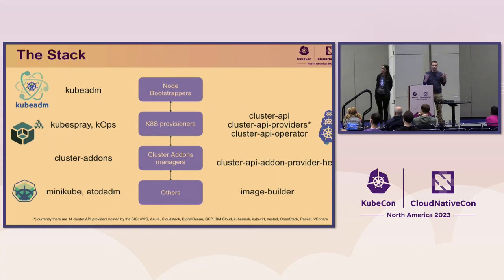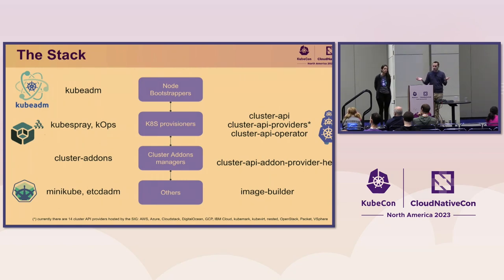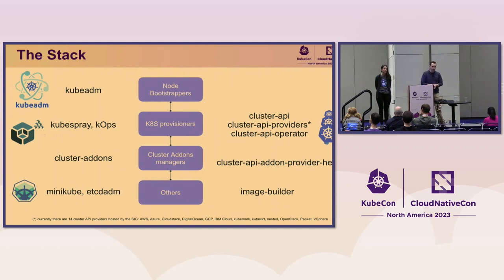We have providers for AWS, Azure, GCP, and also some bare-metal providers. Once you create a Kubernetes cluster, the first thing you have to install is CNI — otherwise your cluster doesn't get ready. And then after that you need to install your cloud controller manager and other things to make the cluster actually useful.